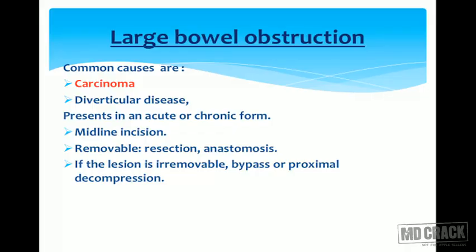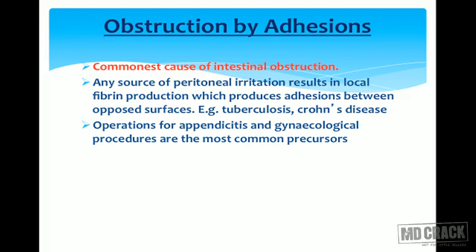Large bowel obstruction: the common causes are carcinoma or diverticular disease. It can present in an acute or chronic form. A midline incision should be done. If it is removable, resection and anastomosis is performed. If the lesion is irremovable, bypass or proximal decompression is done.